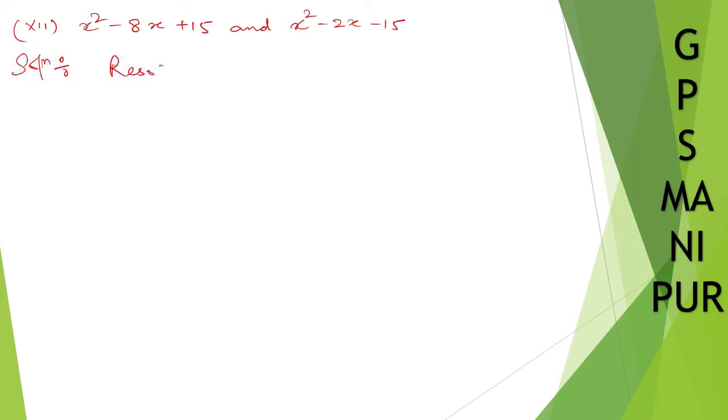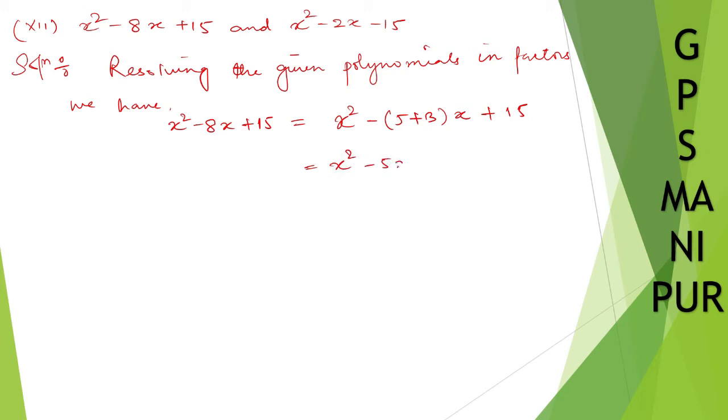Resolving the given polynomials into factors. We have x² - 8x + 15. From this one we have to split the middle term. So 5 × 3 is 15. So I can write down x² - (5+3)x + 15. So x² - 5x - 3x + 15.